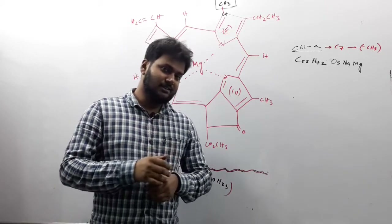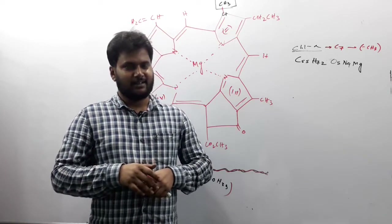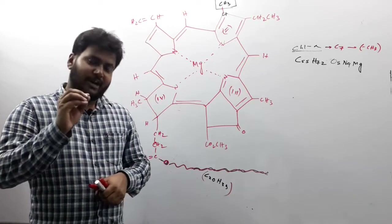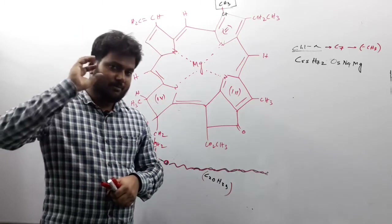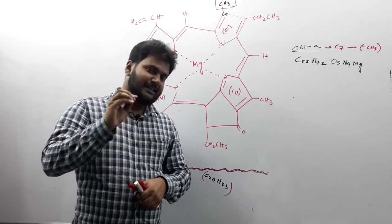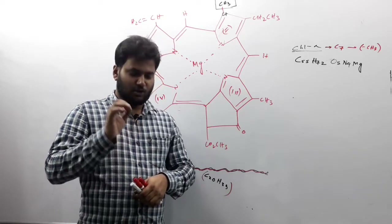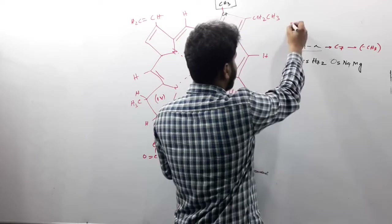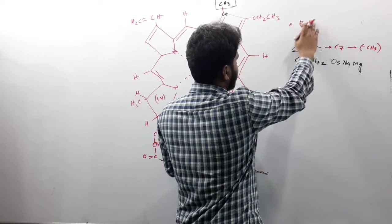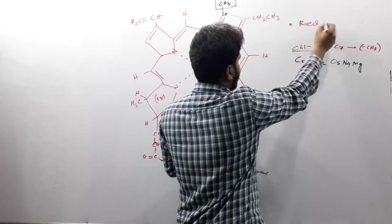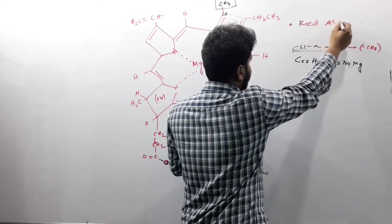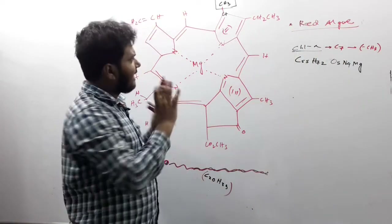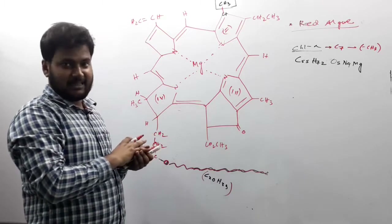Now let us discuss about chlorophyll D. The most important point to remember about chlorophyll D is where it is found. Chlorophyll D is generally found in red algae. This is the most important point you have to remember.